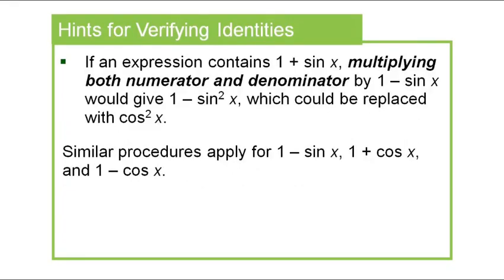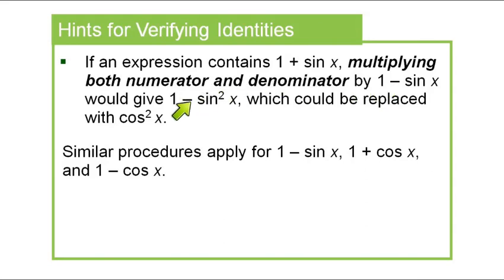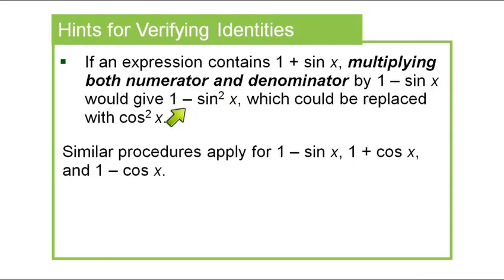If you have an expression containing one plus sine x, you want a Pythagorean substitution, but you need a squared function. What works is to multiply the top and bottom by the conjugate — the same two terms with a different sign. Doing that gives you one minus sine squared, which can be replaced with cosine squared. Anytime you have a single power like one minus sine x or one plus cosine x, multiply by the conjugate with the opposite sign to get something useful.